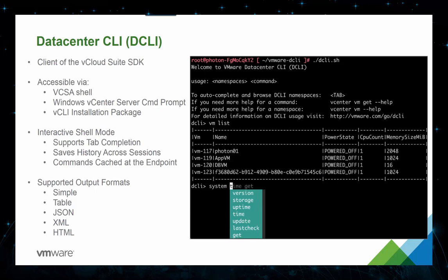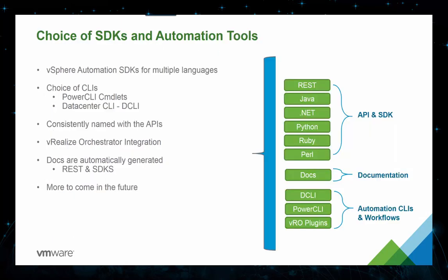The supported output formats for the Datacenter CLI include simple, table, JSON, XML, and HTML. With vSphere 6.5, you have a choice between automation SDKs for multiple languages, a choice of command line tools using PowerCLI cmdlets or the Datacenter CLI. Naming is consistent with the APIs, it has vRealize Orchestrator integration, and documentation is automatically generated for REST APIs and SDKs.